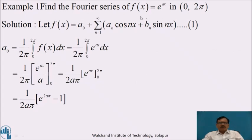Find the Fourier series of f(x) = e^(ax) in the interval 0 to 2π. We know: let f(x) = a₀ + summation from n=1 to infinity of (aₙ cos nx + bₙ sin nx) — let us call this equation number 1.